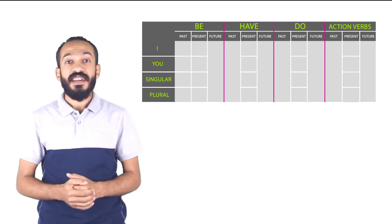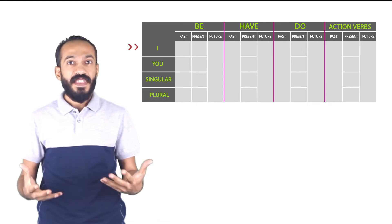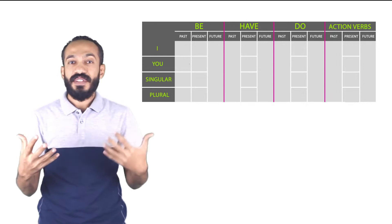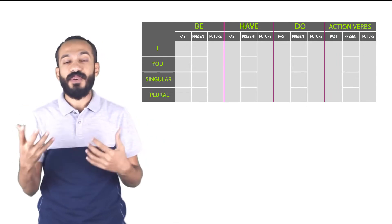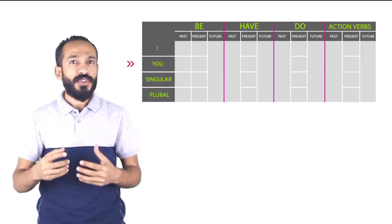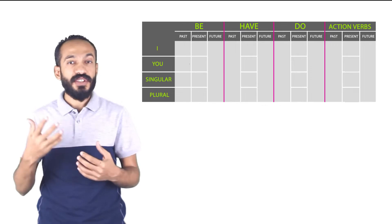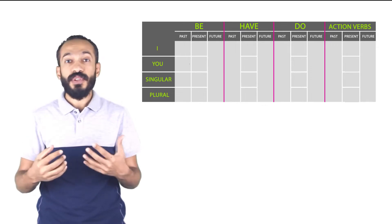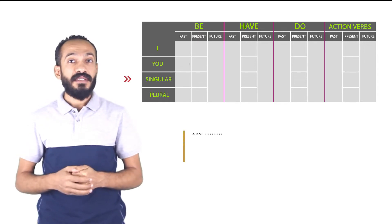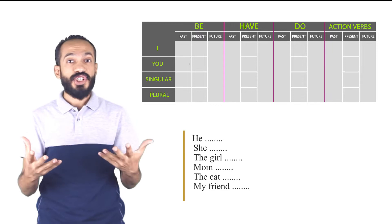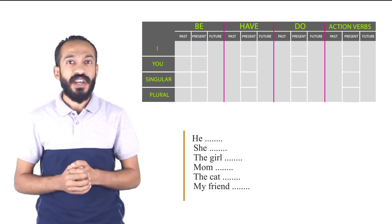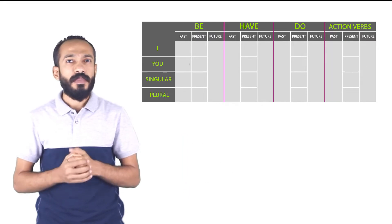The first one is the pronoun I — that's what I use every time I talk about myself. The second subject is the pronoun you, whether you're talking to one person or a lot of people — the singular you or the plural you. The third category is about singular subjects: words like he, she, the girl, mom, the cat, my friend, our English teacher, the black cat.